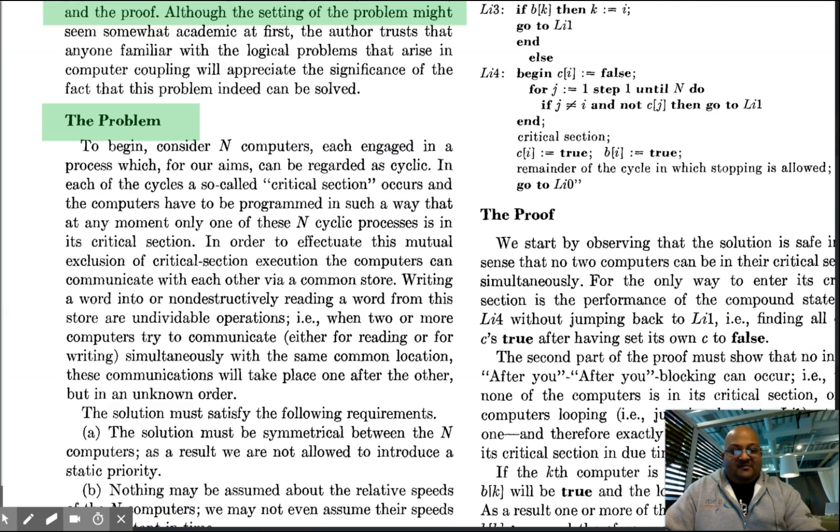So here's the problem. We have n computers, and these are more like processes. These are not computers as we currently understand them. These are like processes within a single physical computer. And each of them is looping infinitely. They're cyclic. And each of them has a critical section.